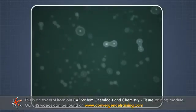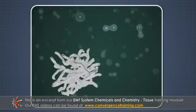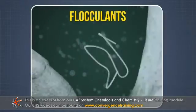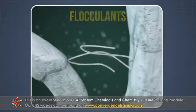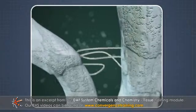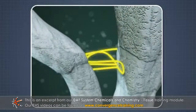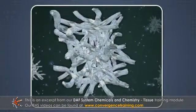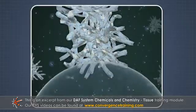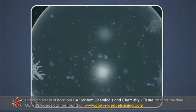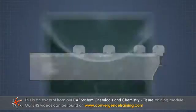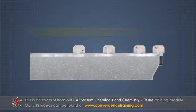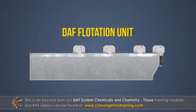High molecular weight polymers called flocculants are added to the solution to help bridge, bend, and strengthen the floc. These larger floc are more buoyant and easier to float. Once they have reached a sufficient size, they can be skimmed off the surface of the DAF flotation unit.